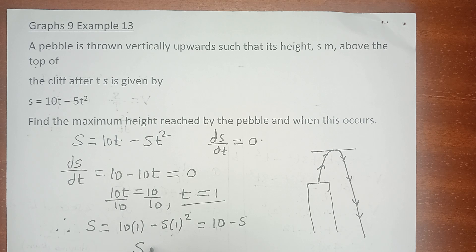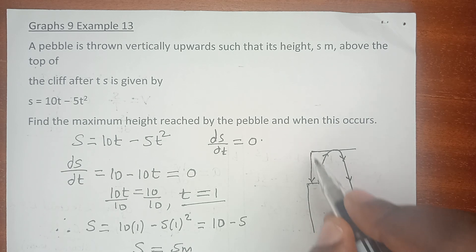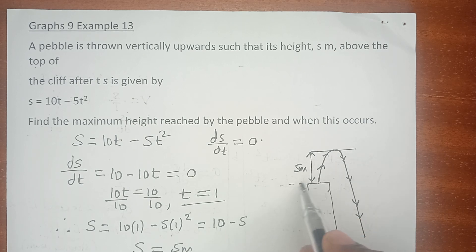The maximum height reached which is s meters is 5 meters, and that is s maximum. This is the height from the top of the cliff. This level is 5 meters and then by gravity it falls freely.